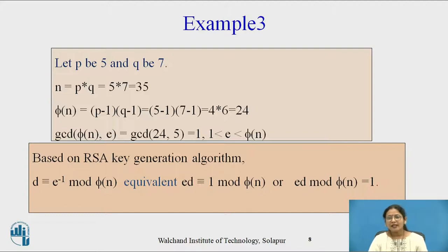Now here we are going to select e such that gcd of phi of n and e equals 1, and e is between 1 and phi of n. So by doing calculation, checking gcd with 24: 1 no, 2 no, 3 is also not equal to 1, 4 no, 5 yes. So e is 5.